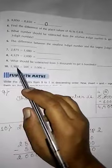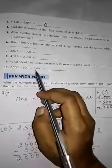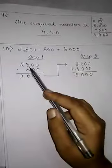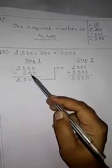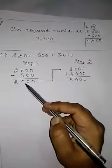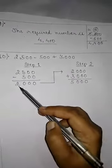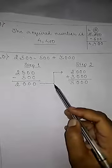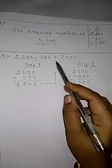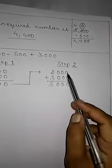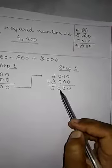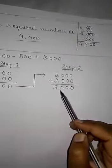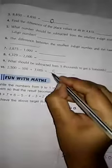Tenth question: 2,500 minus 500 plus 3,000. We will do this in two steps. Step 1 — subtraction: 2,500 minus 500. 0 minus 0 is 0; 0 minus 0 is 0; 5 minus 5 is 0; and 2 minus nothing is 2. Result is 2,000. Step 2 — addition: 2,000 plus 3,000. 0 plus 0 is 0; 0 plus 0 is 0; 0 plus 0 is 0; and 2 plus 3 is 5. Our required answer is 5,000.